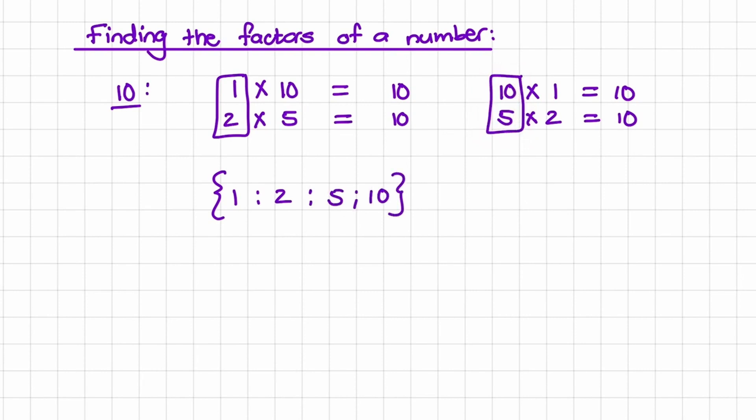An easy way to do this is by simply saying, if I take 1 and multiply it with 10, then these two numbers, 1 and 10, are the factors of 10, and then the next number that can multiply into 10 is 2 and 5. So those two numbers together are factors of 10.